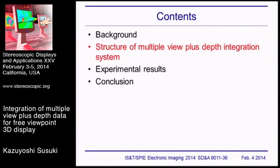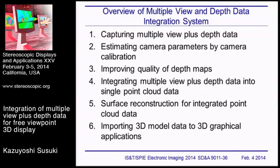Next, I'll explain the structure of the multiple view plus depth integration system. This is an overview of the multi-view and depth data integration system. The first step is capturing multiple view plus depth data. The second step is estimating camera parameters by camera calibration. The third step is improving quality of depth maps. The fourth step is integrating multiple view plus depth data into single point cloud data. The final step is importing 3D model data to 3D graphical applications.